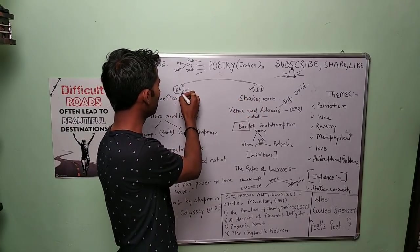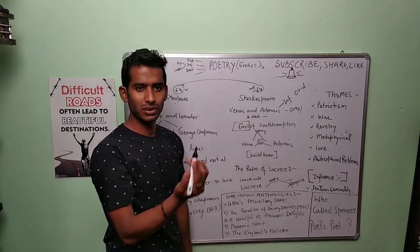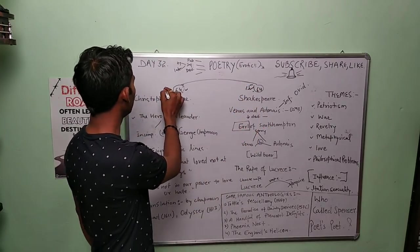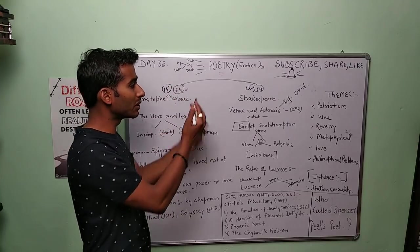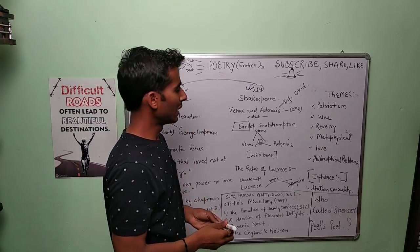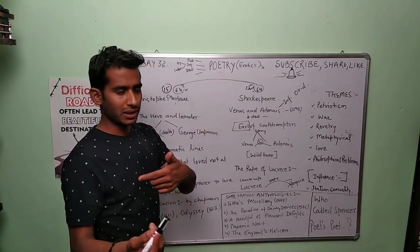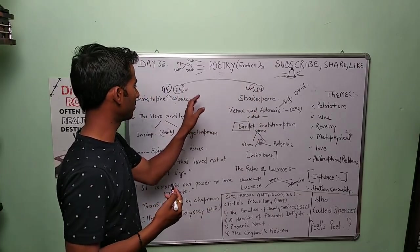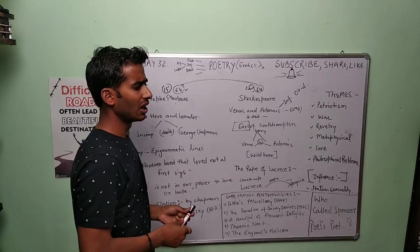Marlowe was born in 64 and Shakespeare was born in 64, so we remember this: 1564. We are talking about 16th century. You can remember this—64, 64. Shakespeare is a clear update and Marlowe is a clear update.